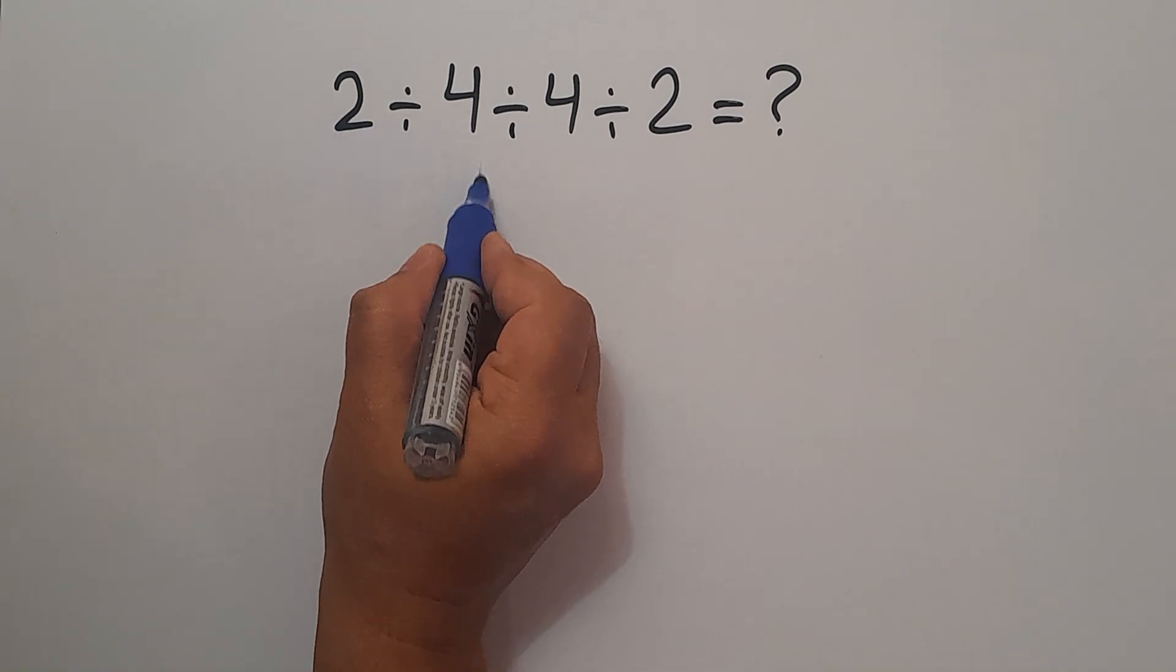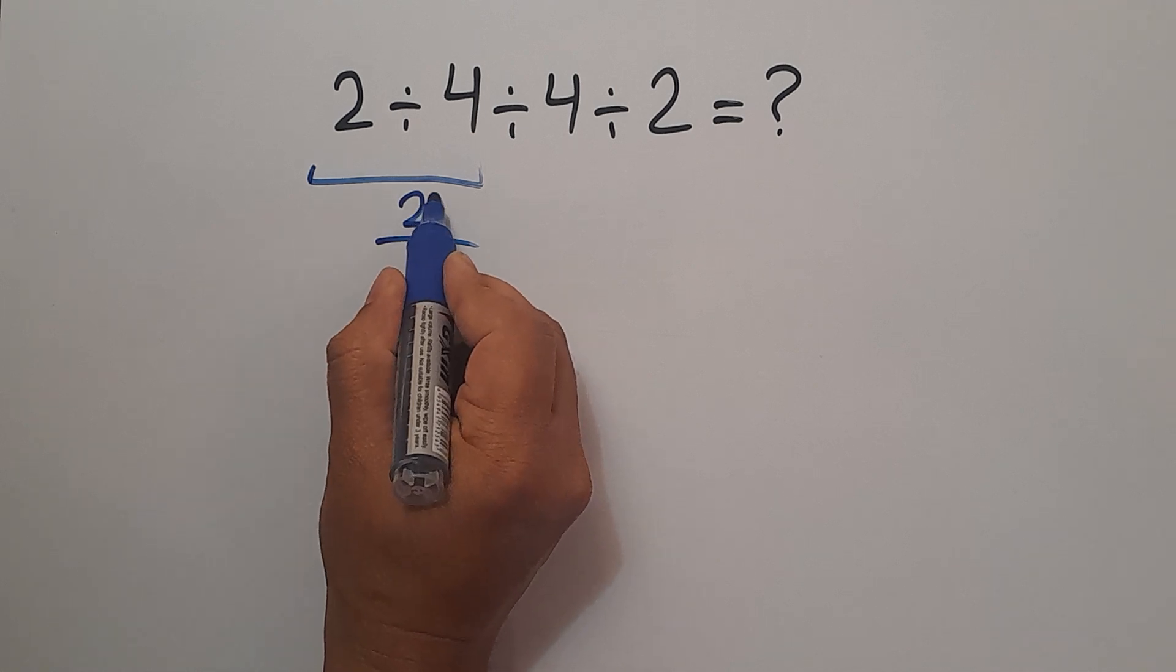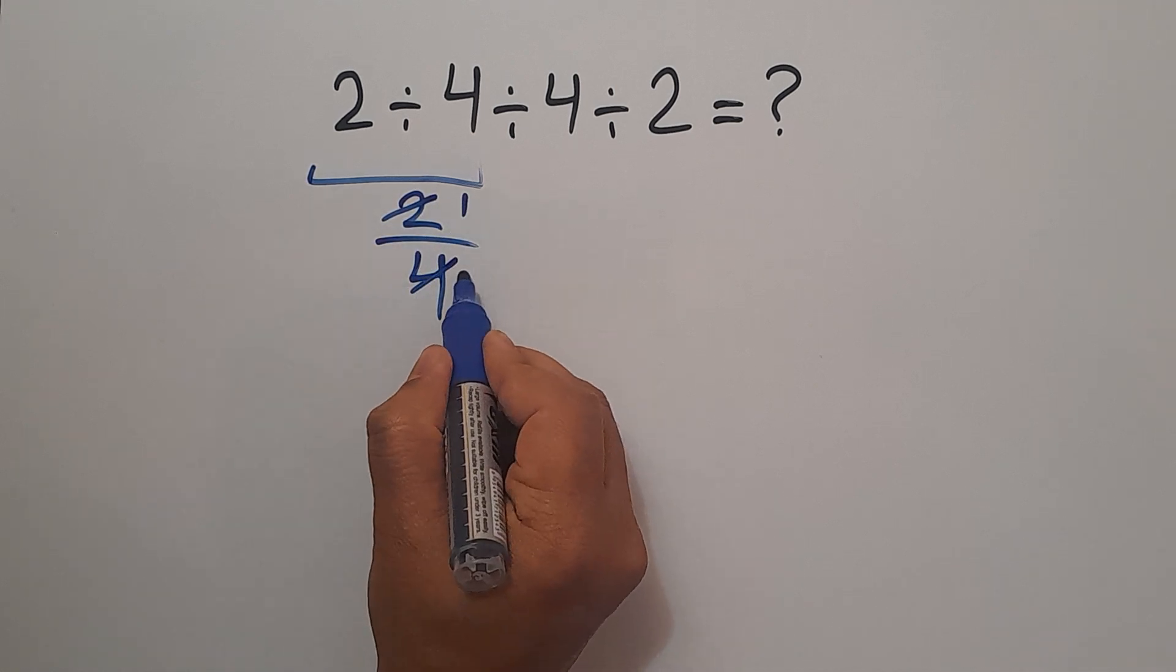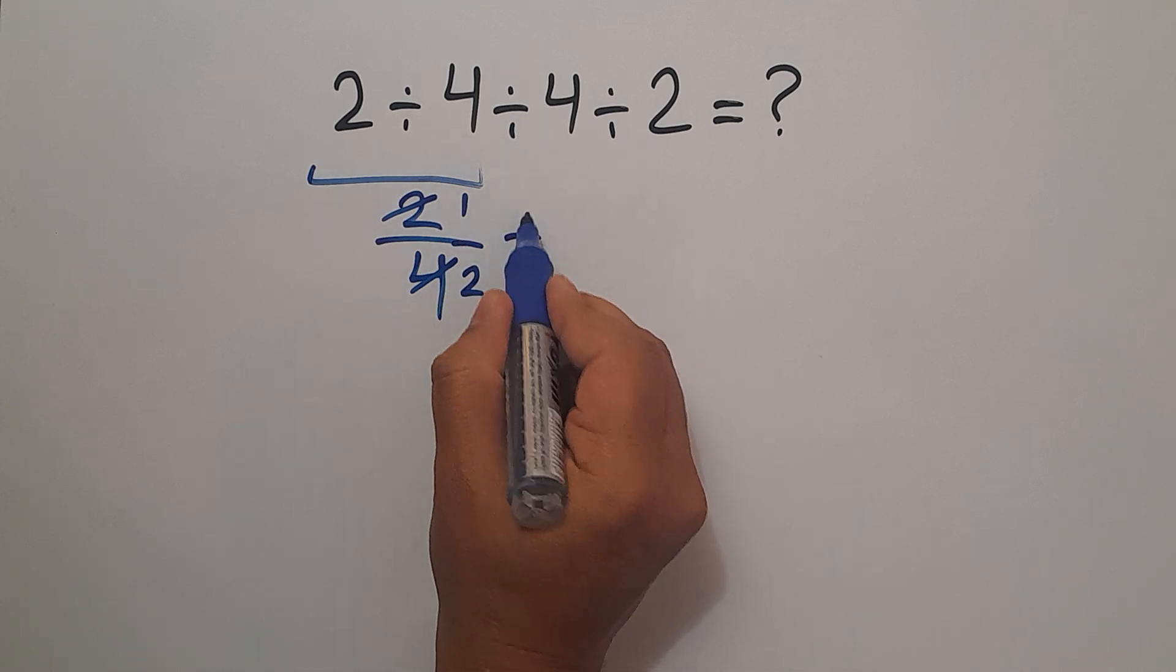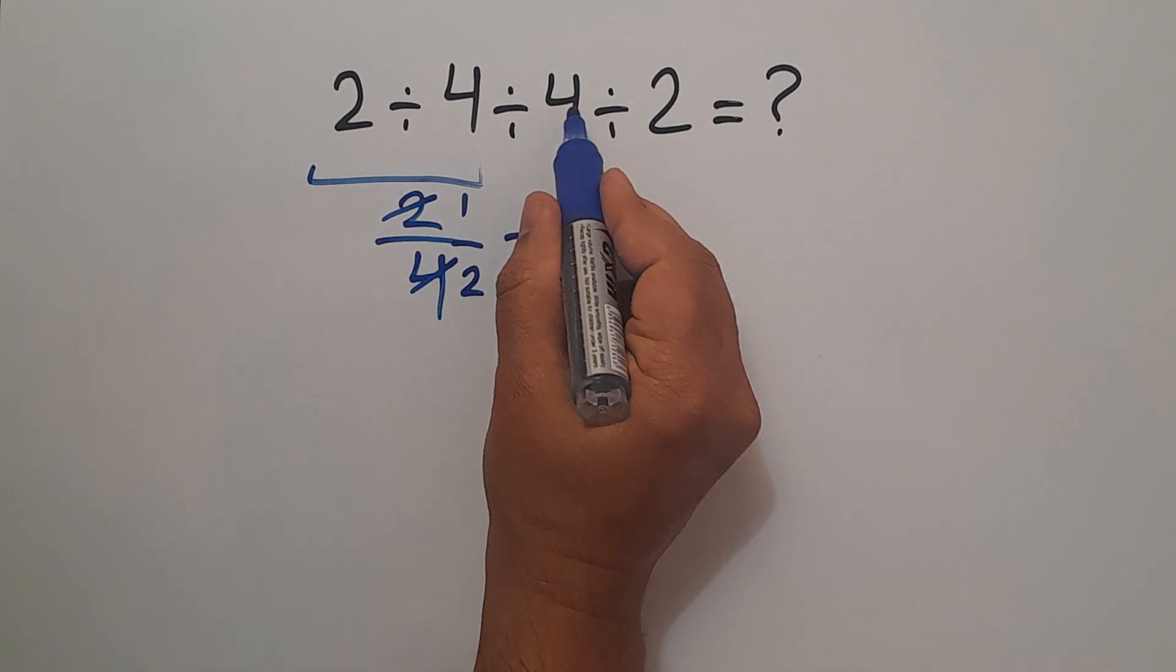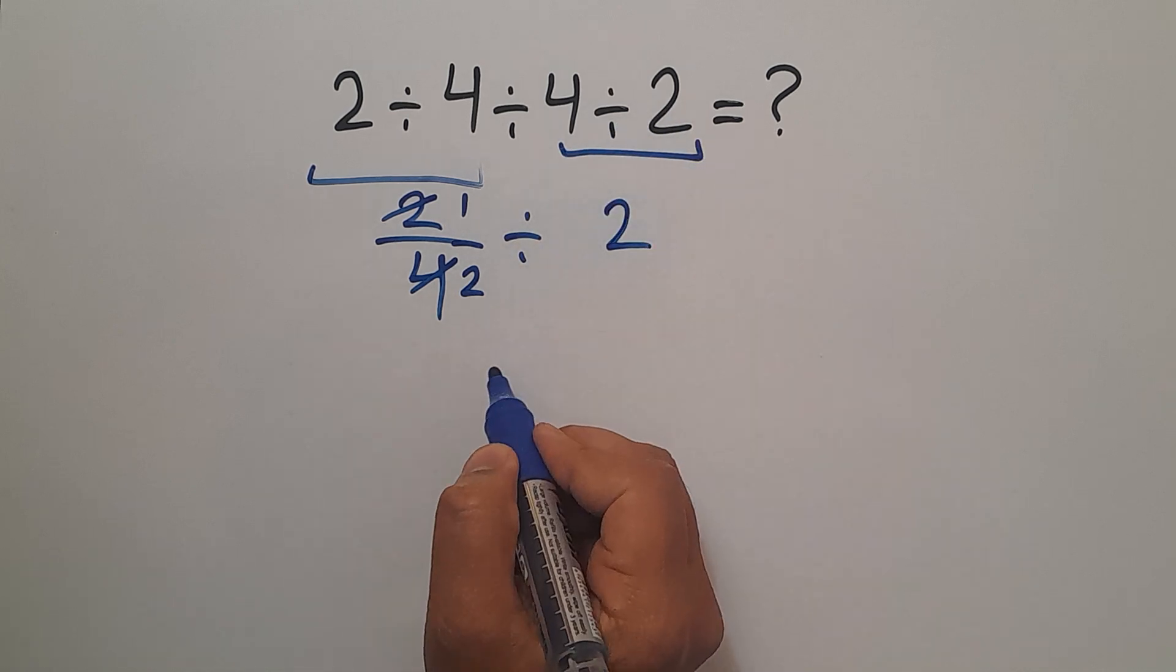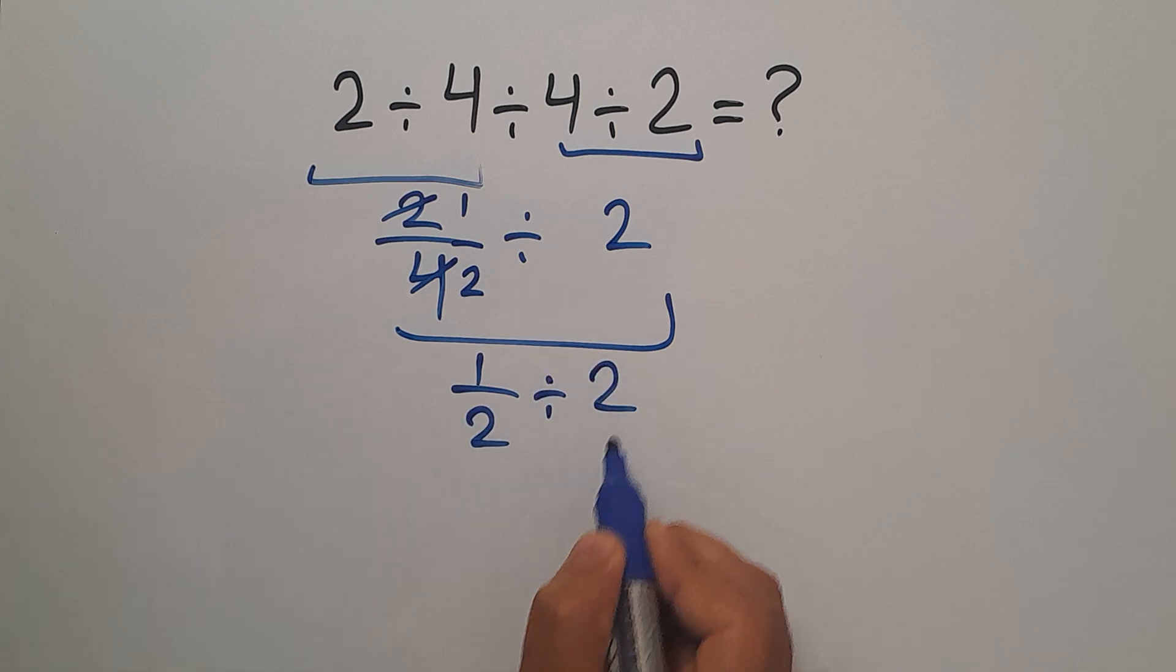2 divided by 4 equals 2 over 4, and 4 divided by 2 equals 2. Here we have divided by 4 divided by 2 which equals just 2, so 1 over 2 divided by 2.